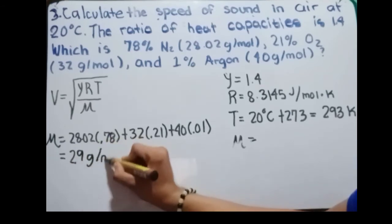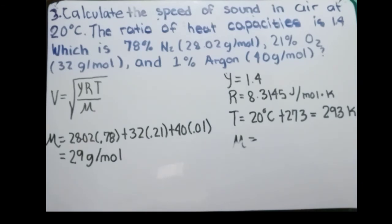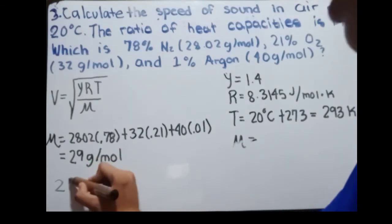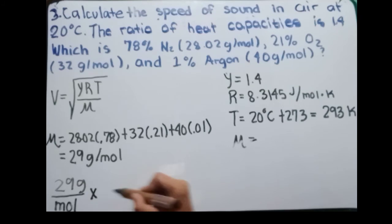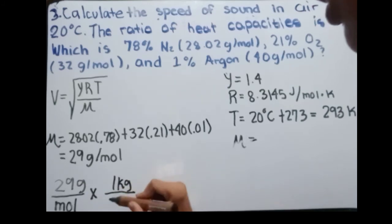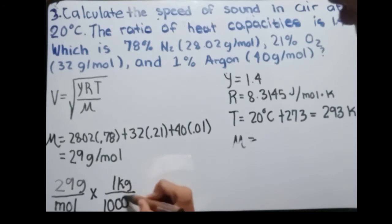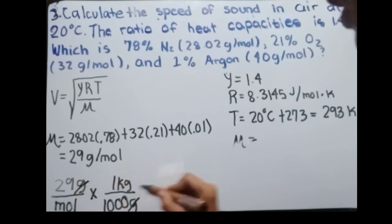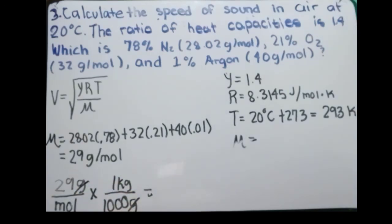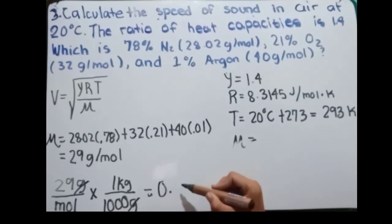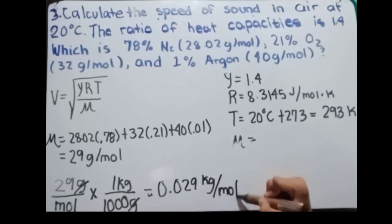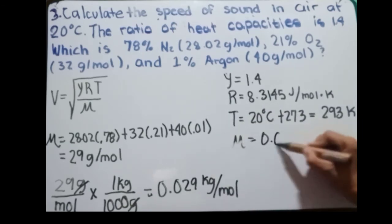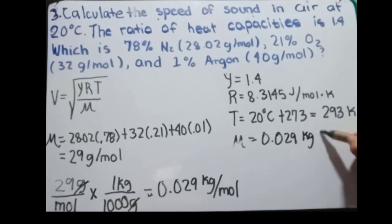Computing this, we get 29 grams per mole. But we need to convert to kilograms, since 1 kilogram equals 1000 grams. Cancelling the grams: 29 divided by 1000 gives us 0.029 kilograms per mole. So the average molar mass is 0.029 kilograms per mole.